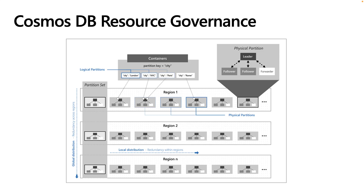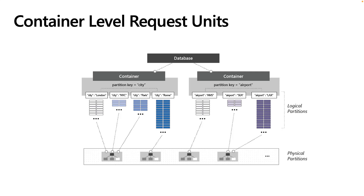Hot partitions might result in throttling and higher costs. Likewise, poor partition key design that results in excessive query fanout can also result in inefficient utilization and excessive RU consumption. Setting throughput at the container level is the most common option as it provides the most predictable performance. Provisioning RUs are distributed evenly across the container's physical partitions, and if an appropriate partition key is chosen, the work will also be evenly distributed across all physical partitions. Because one or more logical partitions are hosted by a physical partition, the physical partitions belong exclusively to the container and support the throughput provisioned on it.